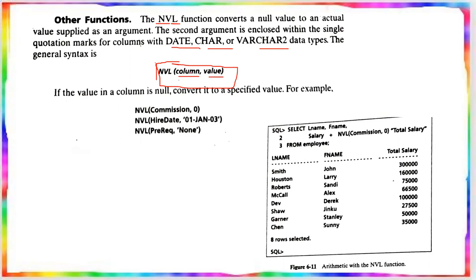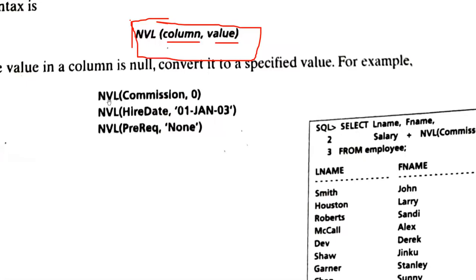In the particular column, if the value contains null, it will be replaced. If the value in the column is null, it will be converted to a specified value. For example: NVL(commission, 0) — the null value in the commission column is replaced with 0.